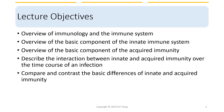Here are the lecture objectives. We'll look at an overview of immunology and the immune system, and then we'll look at some of the basic components of the innate immune system as well as the acquired immunity. We'll describe the interaction between the innate and acquired immunity over the time course of an infection, and lastly, we'll wrap up with a compare and contrast of the basic differences of the innate and acquired immunity.